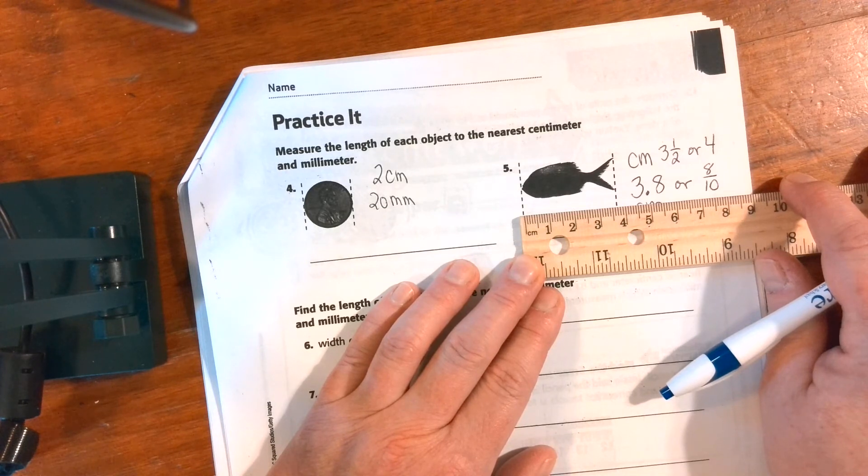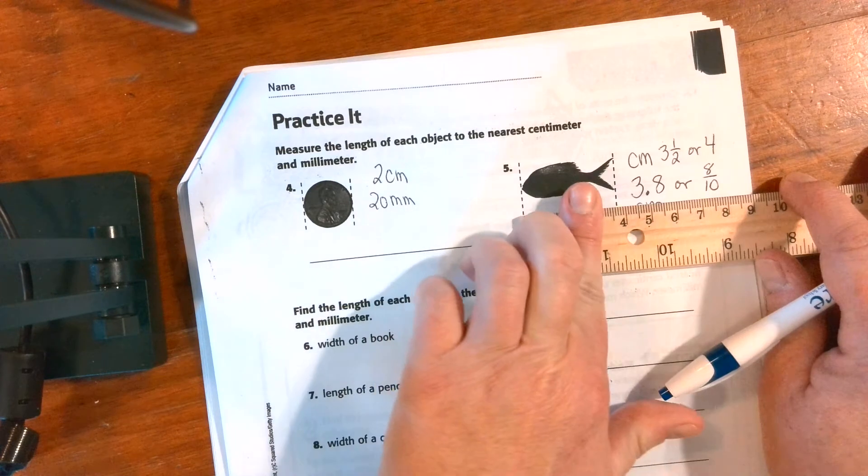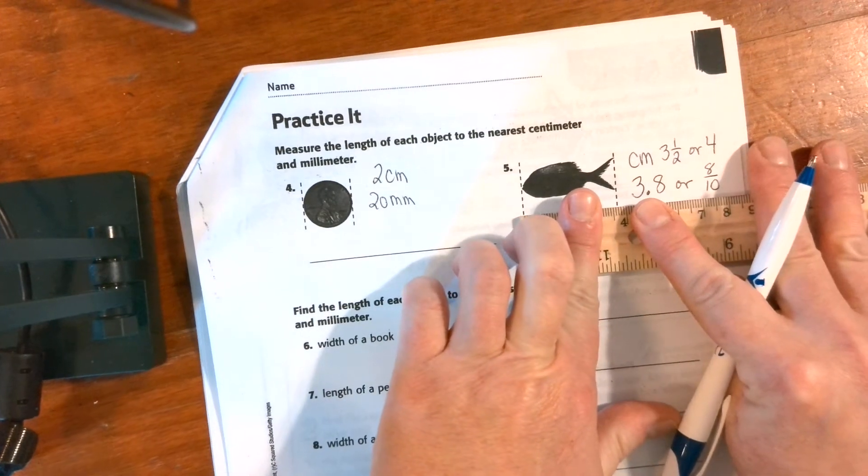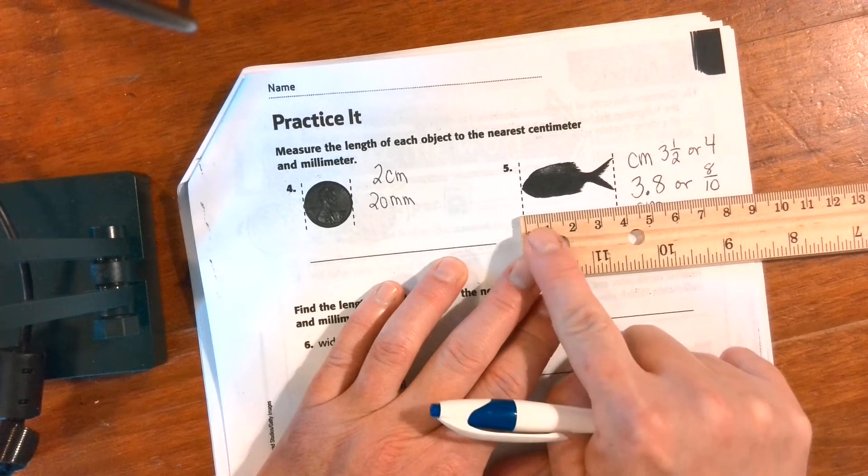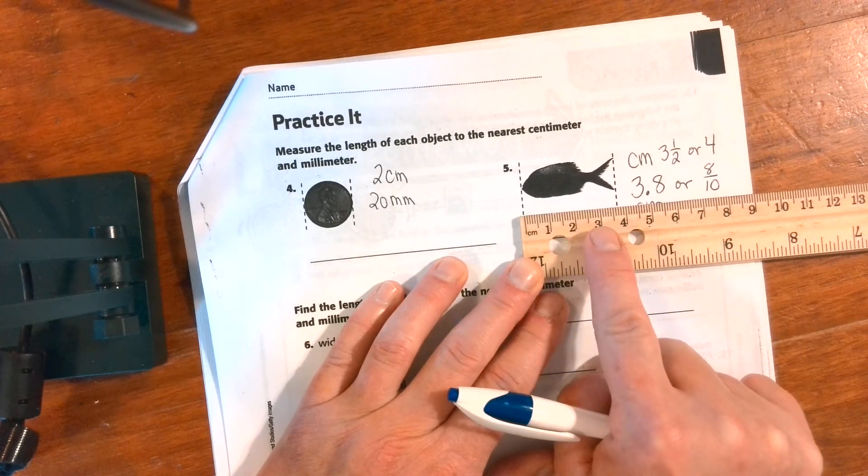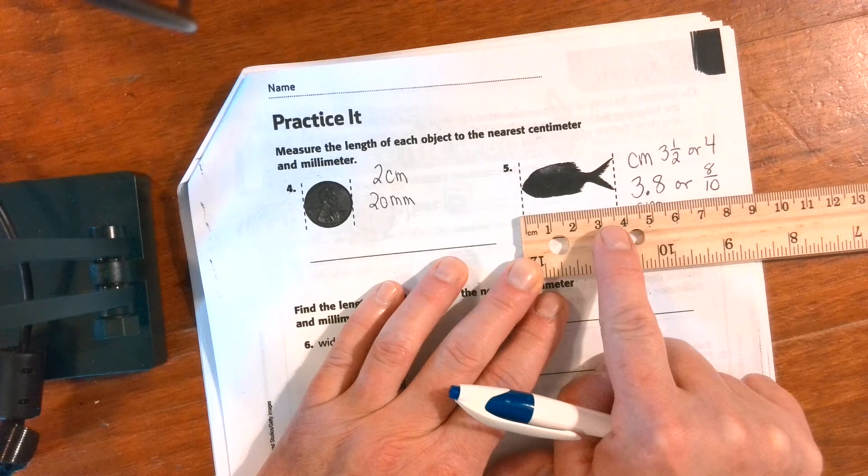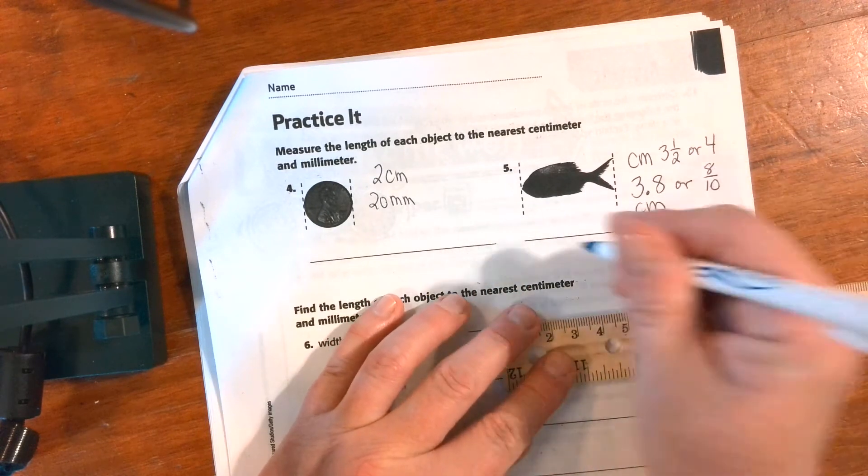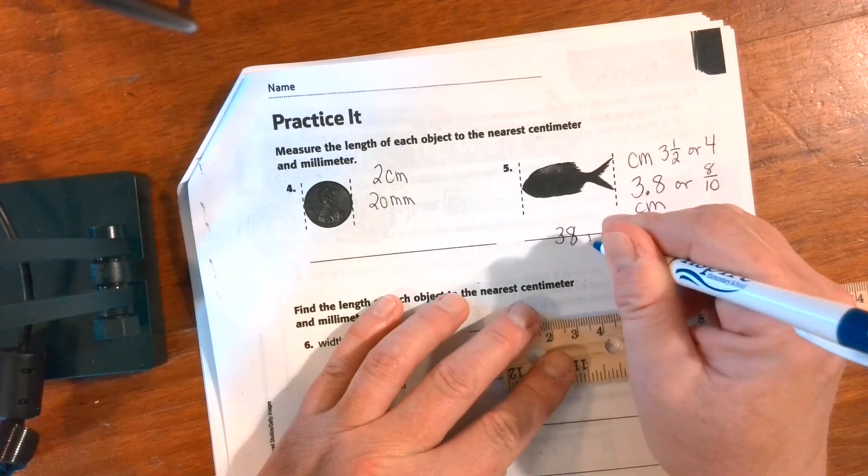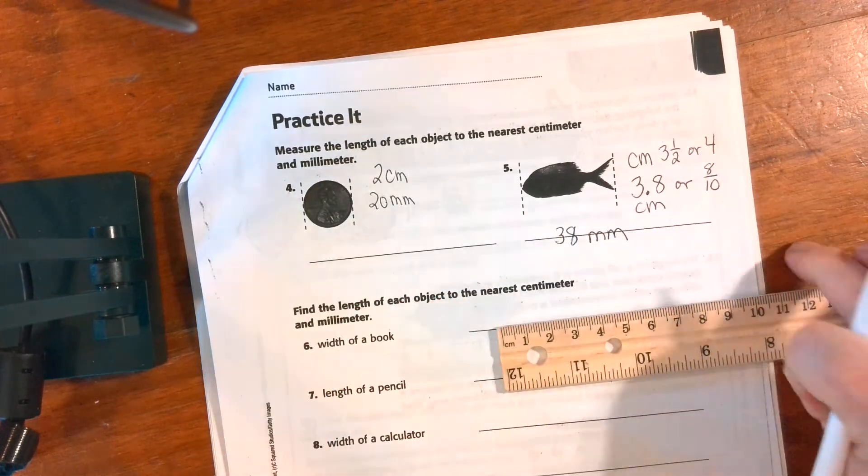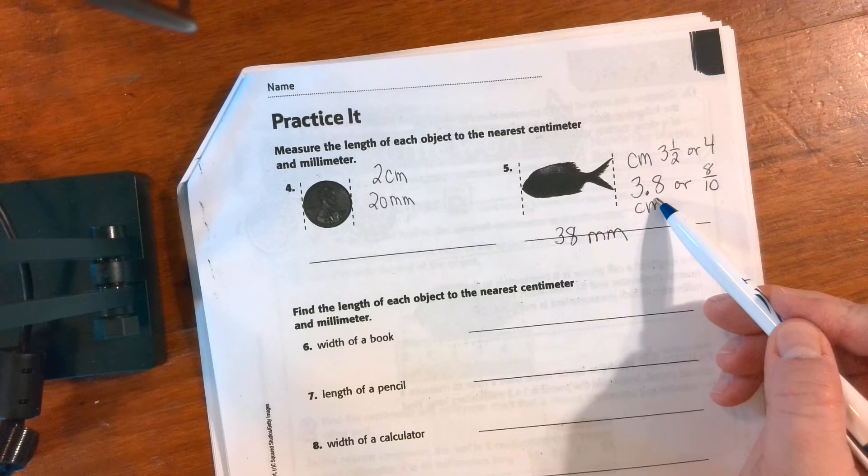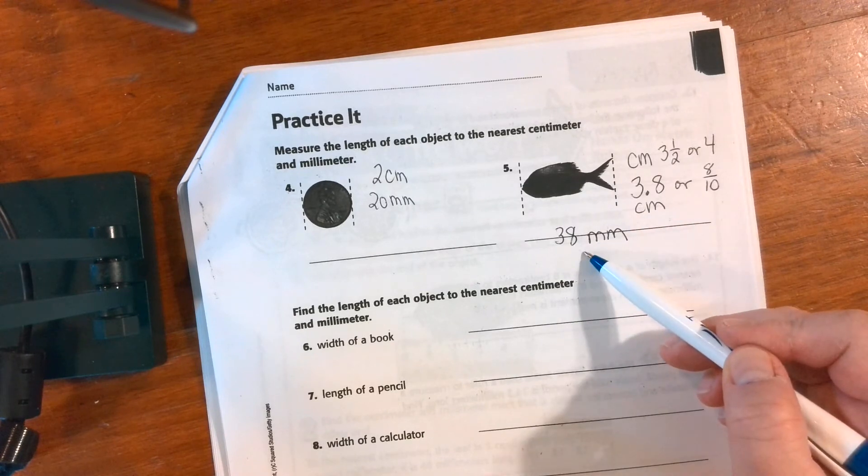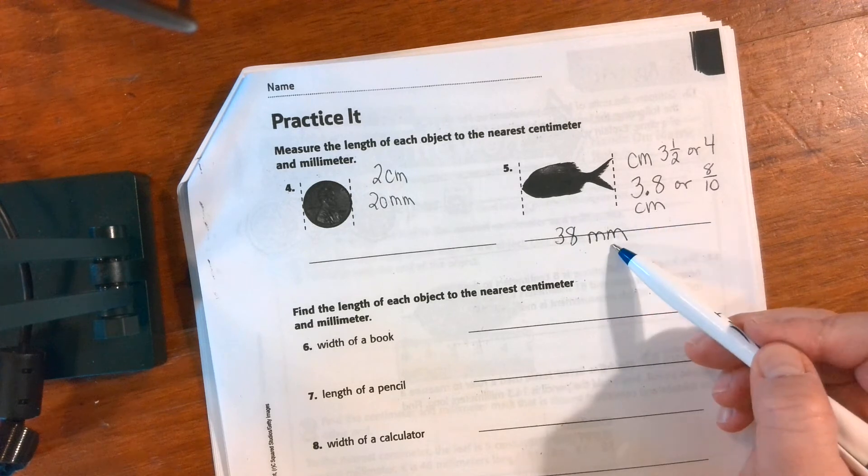All right, now we're going to do our millimeters: 10, 20, 30, 1, 2, 3, 4, 5, 6, 7, 8. Thirty-eight millimeters. Do you notice the pattern? Three point eight, thirty-eight. What did we multiply by to go from centimeters to millimeters?